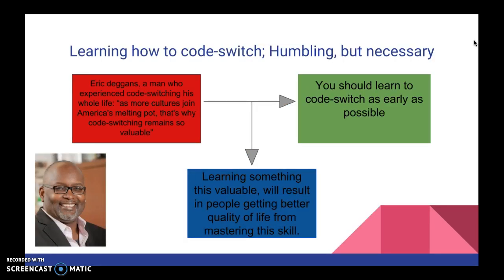Here is an example from Eric Deggans' article, 'Learning How to Code Switch: Humbling but Necessary.' The claim here is that you should learn to code switch as early as possible. To support the claim, the data is that Eric Deggans, a man who experienced code switching his whole life, says that as small cultures join America's melting pot, that's why code switching remains so valuable. Eric's real-life experience is here used as both ethos and locus appeal. The warrant to this argument is that learning something this valuable will result in people getting a better quality of life from mastering this skill.